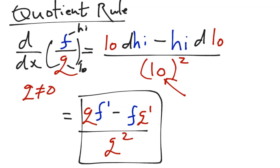The order is important: if you do f·g prime minus g·f prime, you get it wrong, because you can't switch those two without messing up the negative sign. Make sure you remember it as low d high minus high d low, draw the line and square below, and you'll be good to go.